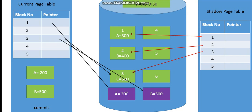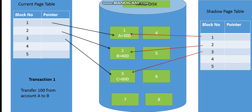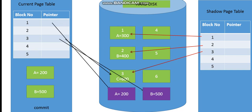Similarly, block B is also updated — since we transfer 100 from account A to account B, 400 plus 100 gives 500. This block is stored in a new free available block in the hard disk. The current page table pointers now point to these new blocks, whereas previously they pointed to the old pages.